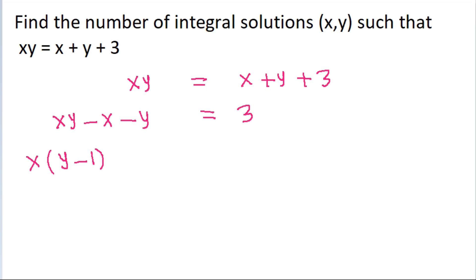This equals 3 plus 1, which is 4. If we take y minus 1 common, we get (x minus 1)(y minus 1) equals 4, where both x minus 1 and y minus 1 are integers.